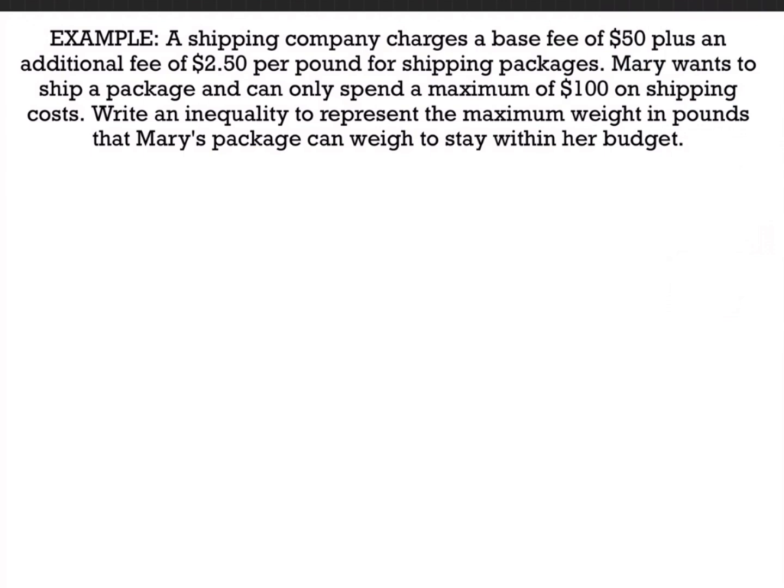Let's do this example to figure out the concept, then we can dive into SAT questions and solve them together. A shipping company charges a base fee of $50 — this is the base fee — plus an additional $2.50 per pound for shipping packages. This is our rate of change: we have $2.50 per pound.